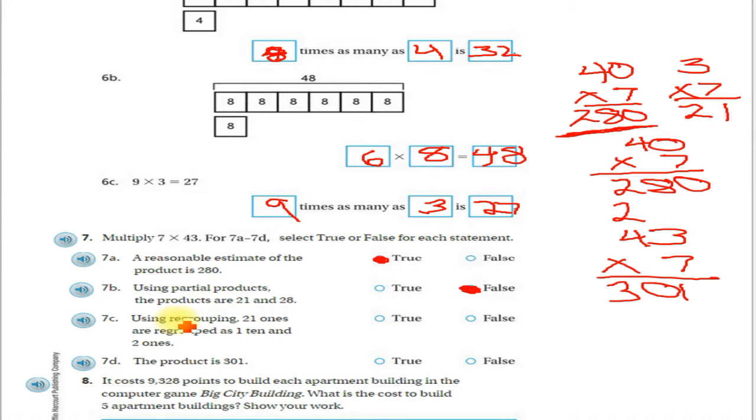Okay, number 7c says using regrouping, 21 ones are regrouped as 1 ten and 2 ones. Well, if we had 21 ones, that's the same thing as just the number 21, which we know 21 is how many tens? 2 tens. And it's saying it should be 1 ten, but we know 21 is 2 tens, so that's false as well. That's not true.